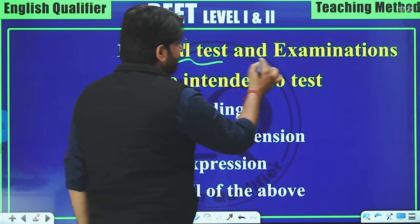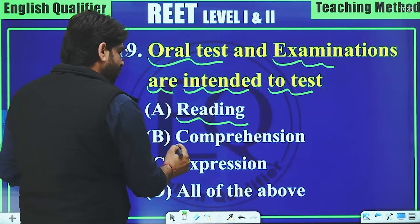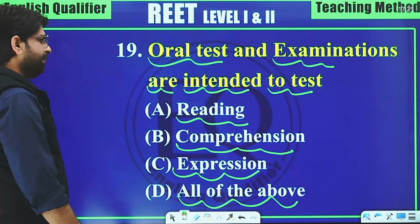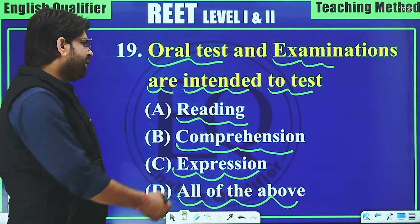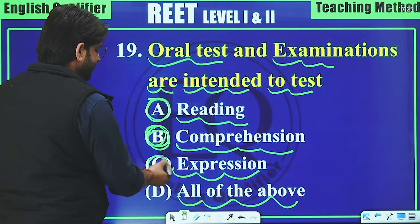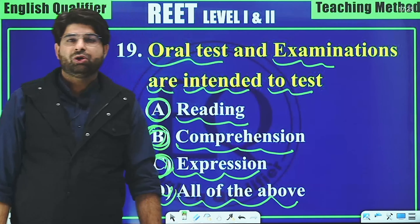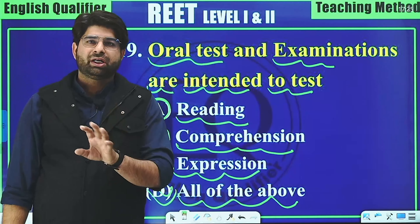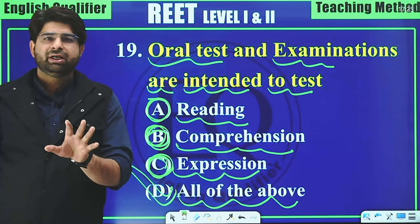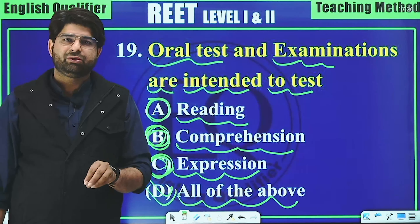Question 19: Oral tests and examinations are intended to test which of the following — reading, comprehension, expression, or all of the above? In oral tests, reading is important, comprehension is important, and expression is important. So option D, 'all of the above,' is correct — oral tests and examinations test all three: reading, comprehension, and expression.